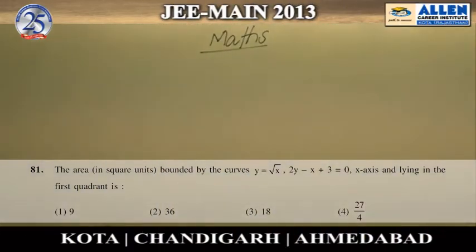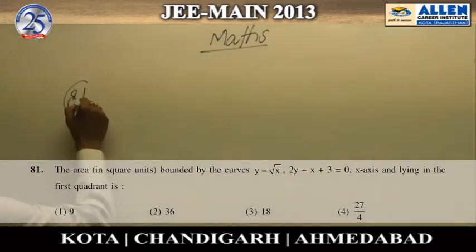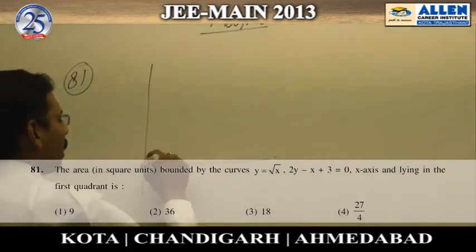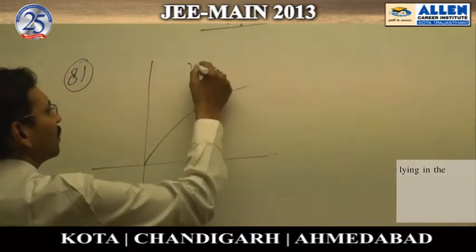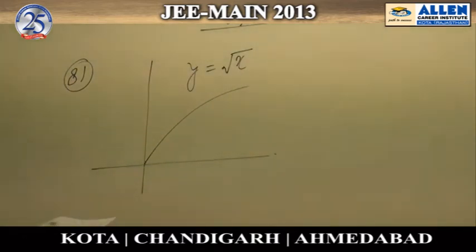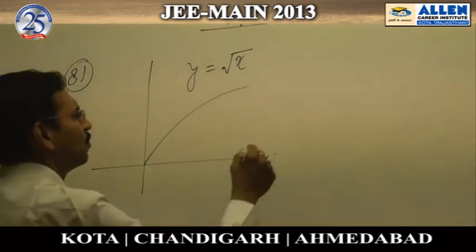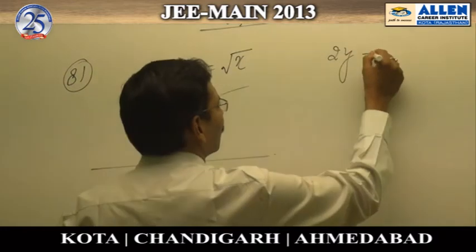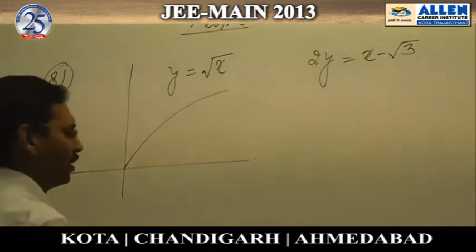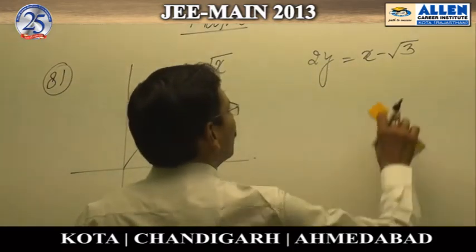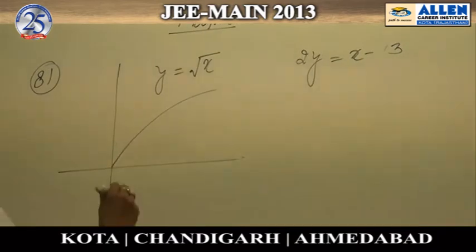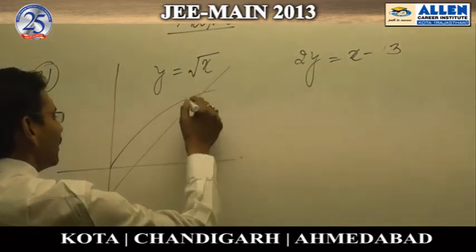Question number 81: we have to find the area bounded by y equals root x and the line 2y equals x minus root 3. We will sketch the graph of the line — 2y equals x minus 3 — and draw the sketch.